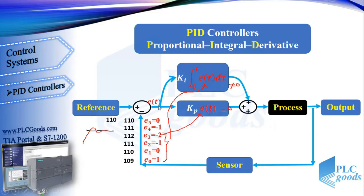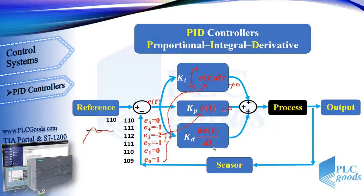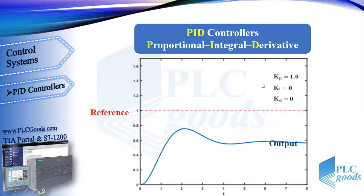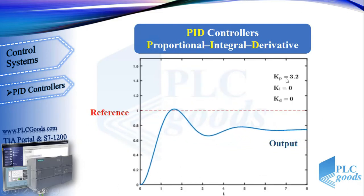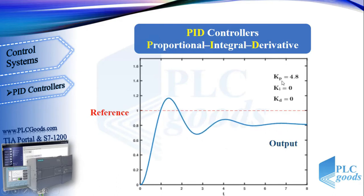Sometimes the derivative term is used in the controller to eliminate fluctuations caused by the integral term. Like the integral term, it's important to understand how the derivative term works. In any industrial process we can achieve a suitable controller by adjusting these coefficients. This figure shows the effect of each coefficient in a suitable PID controller.